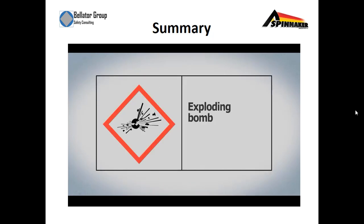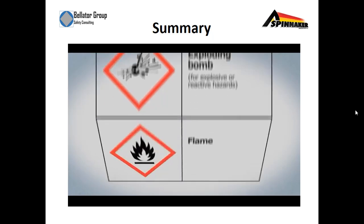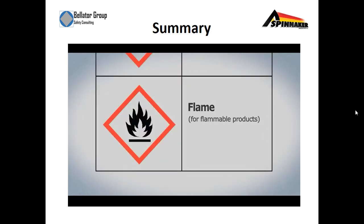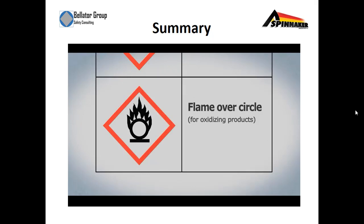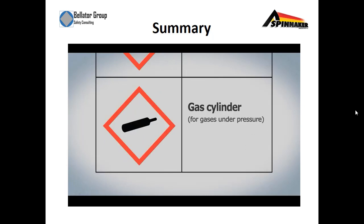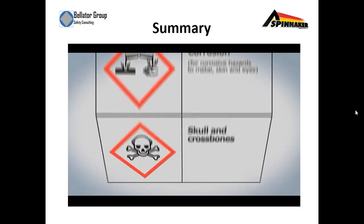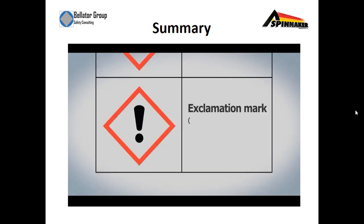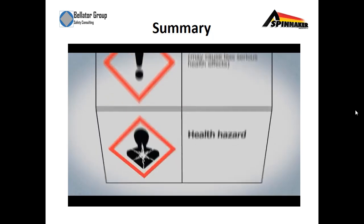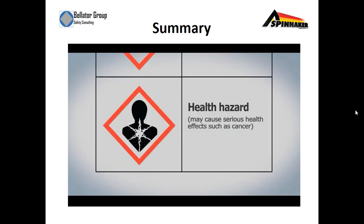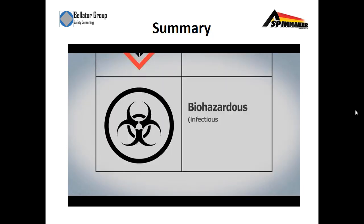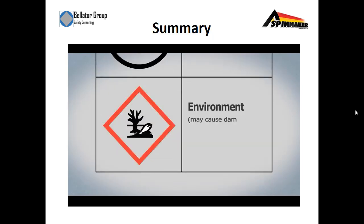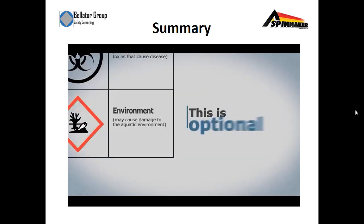The 10 WHMIS symbols are: exploding bomb for explosive or reactive hazards; flame for flammable products; flame over circle for oxidizing products; gas cylinder for gases under pressure; corrosion for corrosive hazards to metal, skin, and eyes; skull and crossbones — can cause death or toxicity with exposure; exclamation mark — may cause less serious health effects; health hazard — may cause serious health effects such as cancer; biohazardous — infectious materials and toxins that cause disease; and environment — may cause damage to the aquatic environment (optional in Canada).